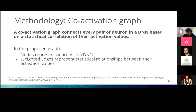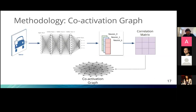Here is the pipeline for building a co-activation graph. Imagine a neural network with three hidden layers. We input some data — for example, a bunch of images. When we input these images, the neurons output activation values, and we collect a list of activation values for each neuron. With this list, we can calculate the correlation between neurons and build a correlation matrix. This correlation matrix is all we need to build the co-activation graph — which is, in principle, a fully connected graph where nodes are neurons and edges are the statistical correlations between them.